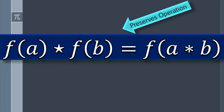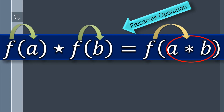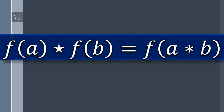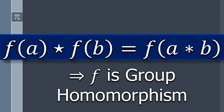This means no matter whether you apply the operation on a and b first and then apply the function, or you apply the function first and then the operation, the answer remains the same. So if we have a function between two groups that fulfills this condition, then we say that F is a group homomorphism.